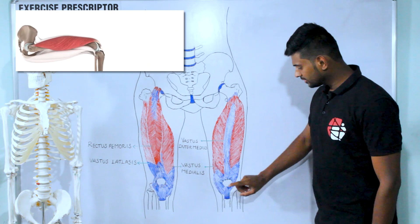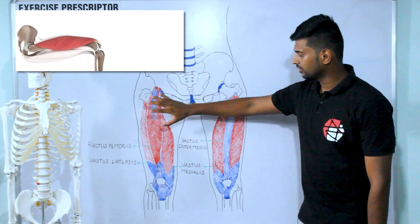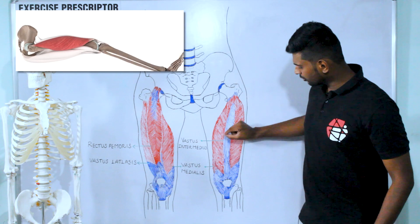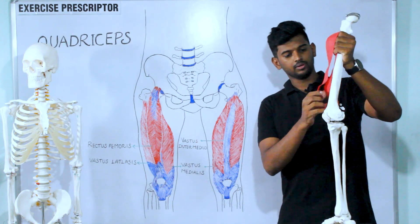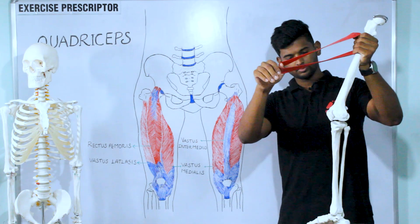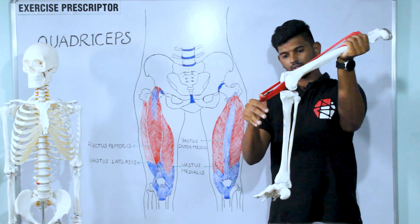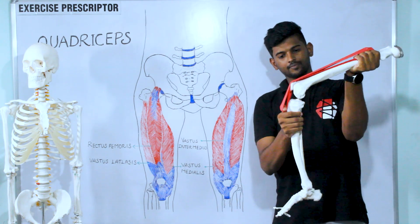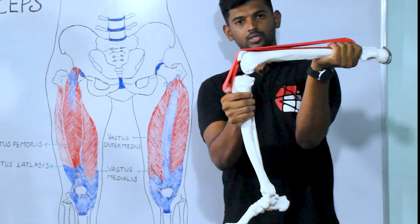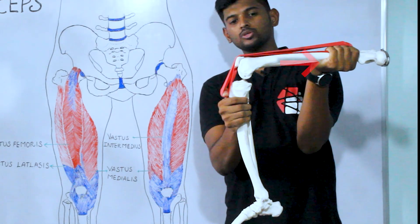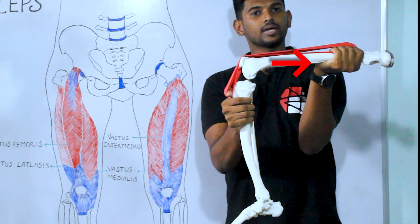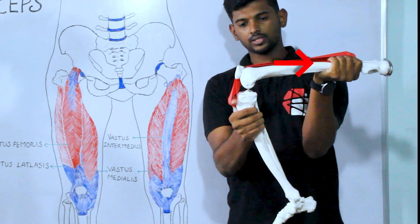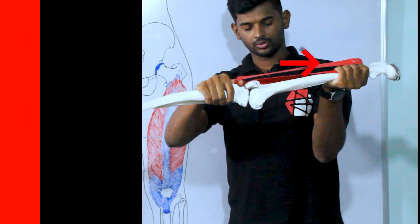In standard mover action, the distal attachment is moving while the origin is fixed. The muscle fibers are pulled in this way — the quadriceps muscle attaches over the tibial tuberosity, and when the muscle fibers contract, it helps to extend the knee joint.